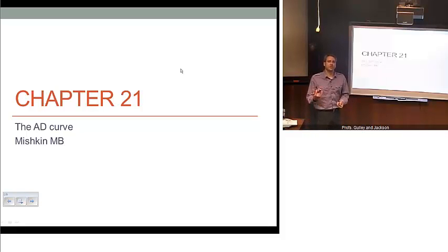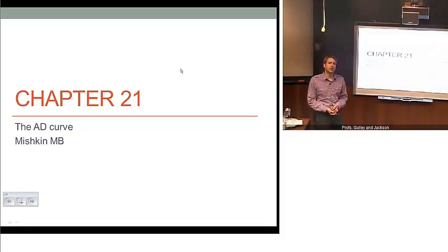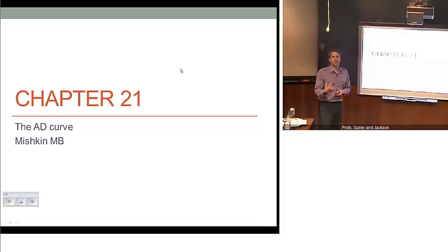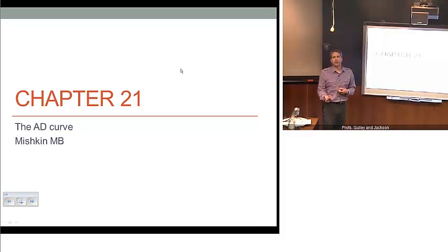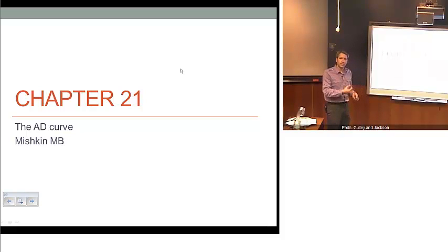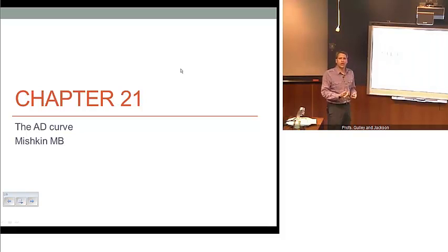Welcome back. This is the second half of Chapter 21 in Michigan's Money and Banking textbook. It explores specifically the connection between the IS curve and the MP curve, which we developed in earlier sections, and how that relates to our notion of aggregate demand. The beauty of this is that it allows us to put all of these pieces together to understand the basic mechanics of how demand can change through shocks and policy.